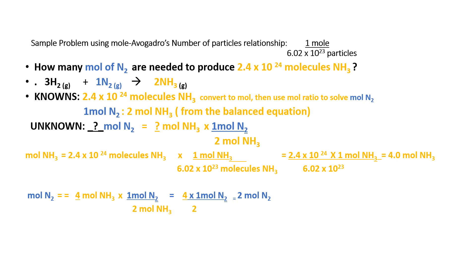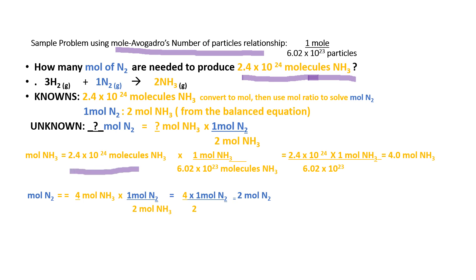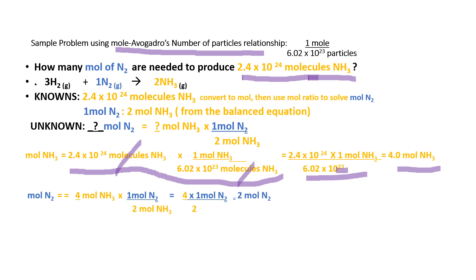Sample problem using the mole–Avogadro's number of particles relationship: How many moles of nitrogen are needed to produce 2.4 × 10²⁴ molecules of NH₃? The given is not in moles, so convert it using Avogadro's number. Cancel molecules NH₃: 2.4 × 10²⁴ × (1 mole NH₃ ÷ 6.02 × 10²³) gives 4 moles of NH₃. Now you can calculate the moles of the unknown using the mole ratio, with the unknown on top and the given on the denominator.